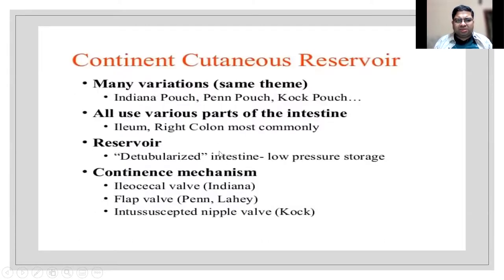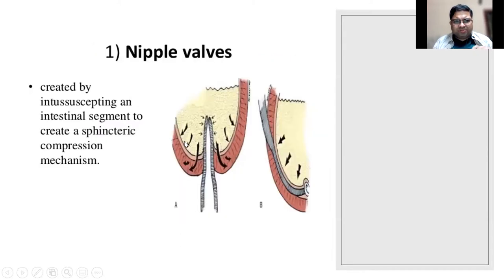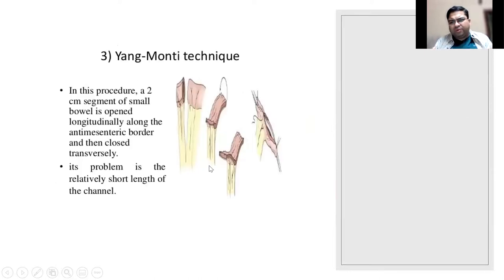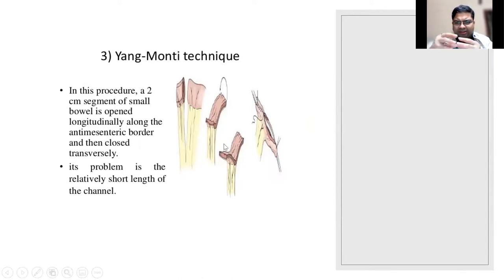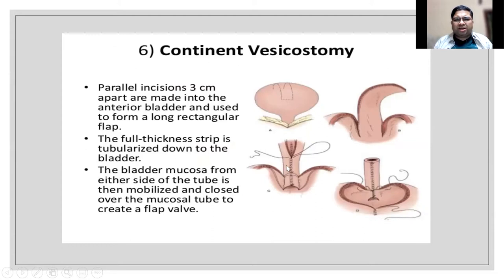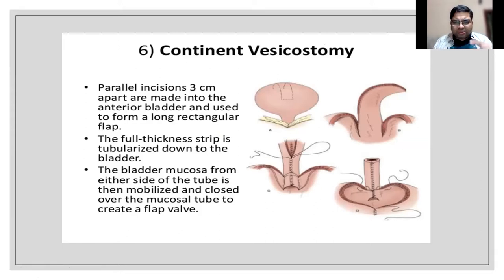In the continent cutaneous reservoirs, a segment acts as a nipple valve - when urine is stored, it creates a valve-like action on the outlet. The Mitrofanoff uses the appendix; the Monti/Yang-Monti procedure is used when the appendix is absent or too short. In the Yang-Monti, a small piece of intestine is cut, rolled longitudinally like a cigarette to create a tube. The Casale modification takes a bladder flap and rolls it longitudinally, intussuscepting the lower end to create a passive continence valve mechanism.